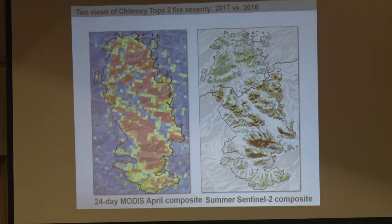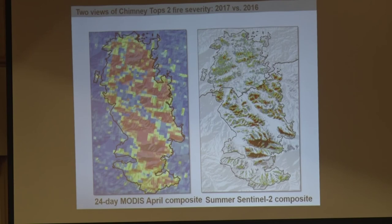Moving on to Sentinel — Steve Norman was showing you some graphics from yesterday. Here's the Chimney Tops fire. From MODIS imagery at 250-meter pixel resolution, you can see the magnitude of the fire's impact on vegetation within the perimeter. Now here's the same imagery but at 10-meter resolution from Sentinel. We can see very clearly exactly where the fires were most intense, where the vegetation was most directly affected, and how the topography affected the severity of the fire. So this high-resolution imagery has a lot of advantages when we really want to understand the processes.